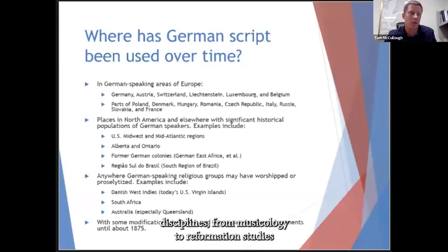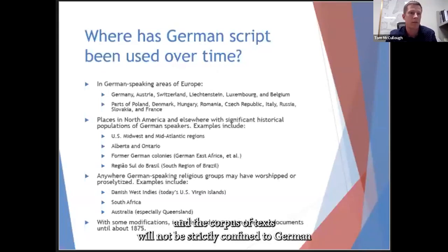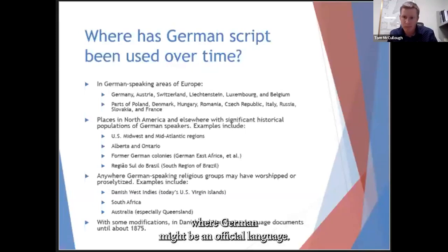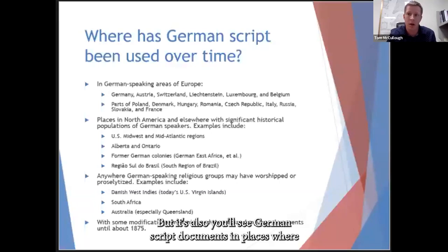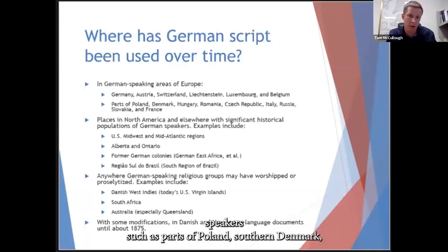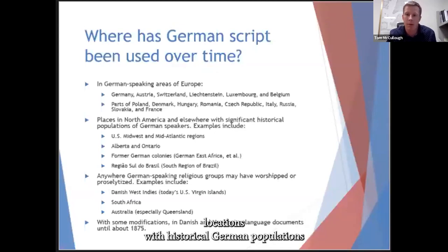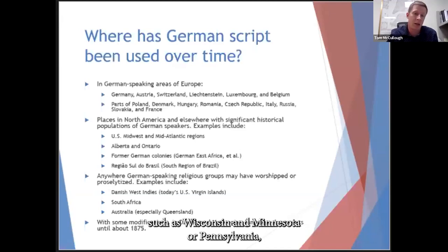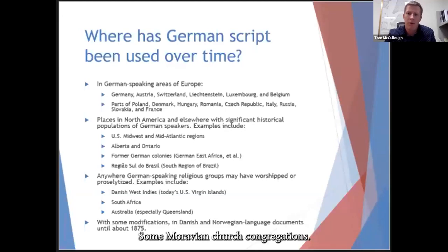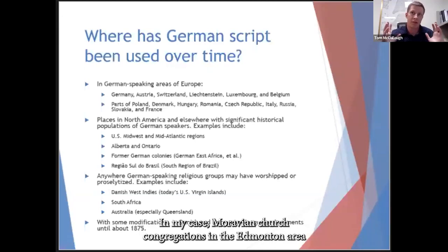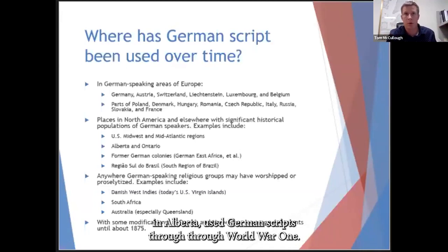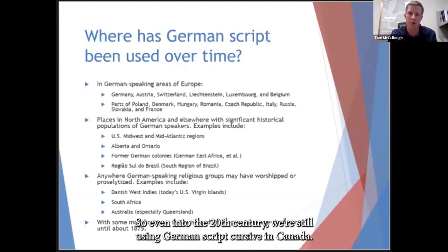Researchers in all disciplines — from musicology to Reformation studies to genealogy — are likely to encounter German script documents. The corpus is not strictly confined to German-speaking areas like Germany, Belgium, or Luxembourg, but also appears in places with historically large German-speaking populations, such as parts of Poland, southern Denmark, Wisconsin, Minnesota, Pennsylvania, New Jersey, and Maryland. Some Moravian church congregations in the Edmonton area of Alberta used German script through World War I, so even into the 20th century German script cursive was used in Canada. You'll see this as well in Ontario among some different religious groups.